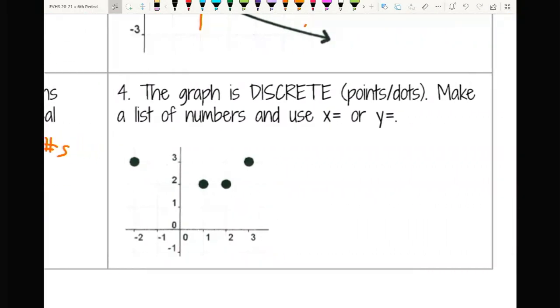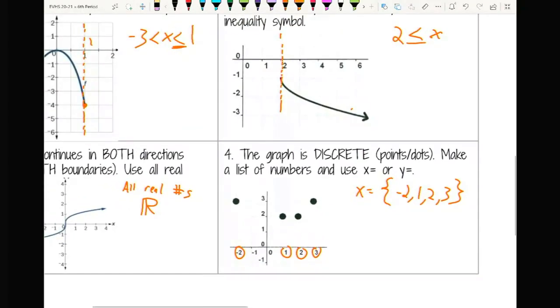Number four, this one's different because the graph is discrete, not continuous. Discrete means it's individual points, continuous means it flows freely between them, sort of like a line or a curve. All you do on these is you write x equals open curly brace and now list your x values. So I go to my far left point, it looks like its x value here is negative 2. The next point, his x value is 1. The next one's x value is 2 and then our last one is 3 and when I've got all of that, I've got my curly brace.